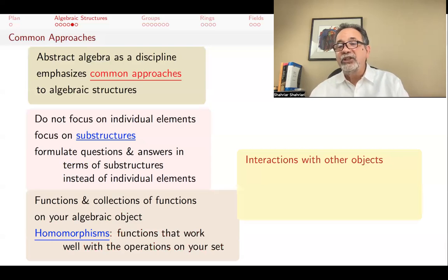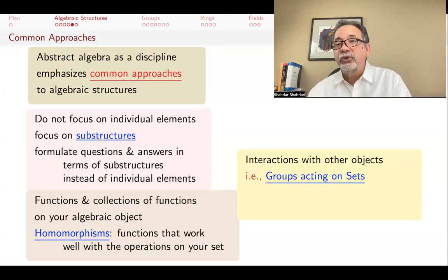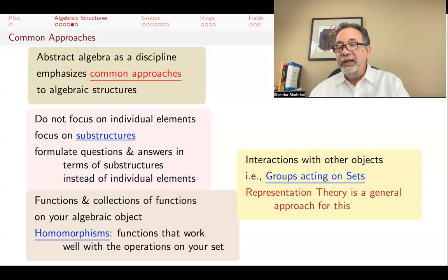A third approach is to see the interactions of your object with other objects. In group theory, for example, the idea of actions of groups on sets will be central to our understanding of groups themselves. Representation theory is a general approach for doing this, for finding versions of your algebraic object in other more manageable algebraic objects.